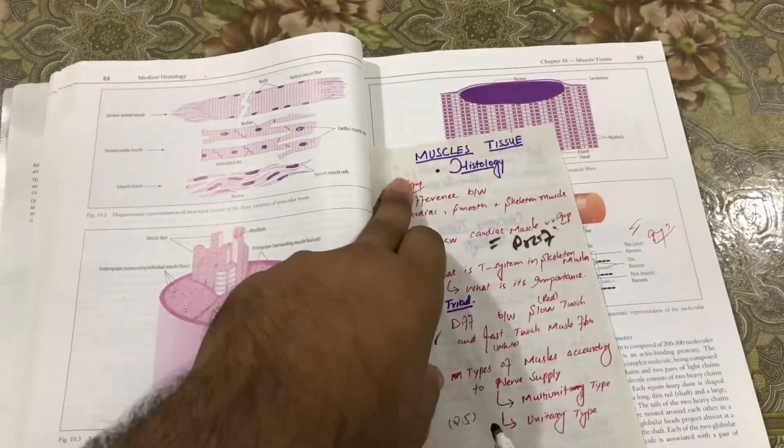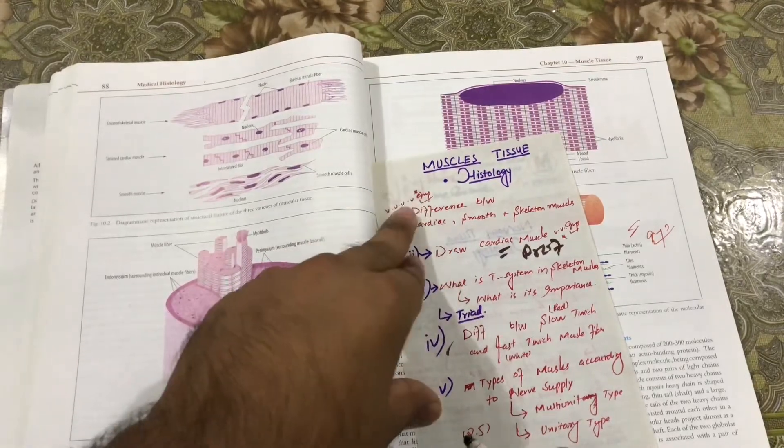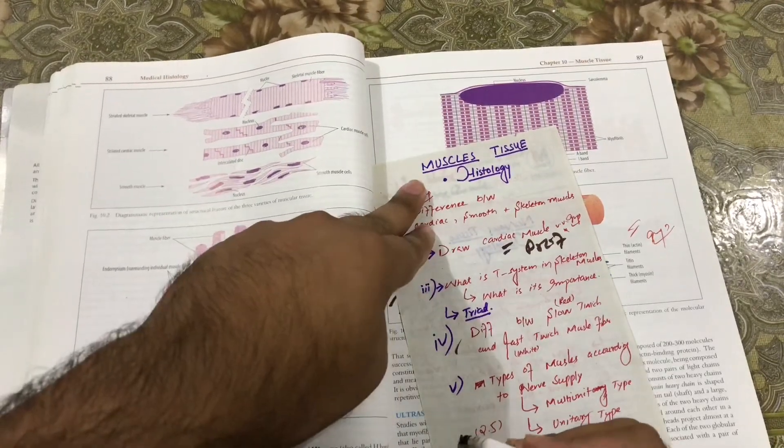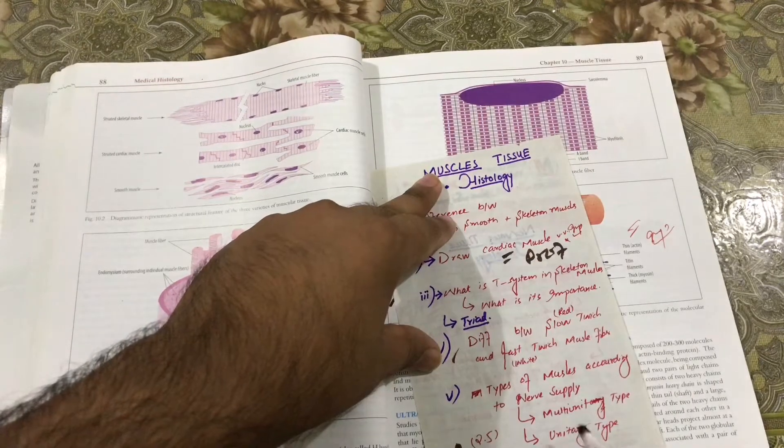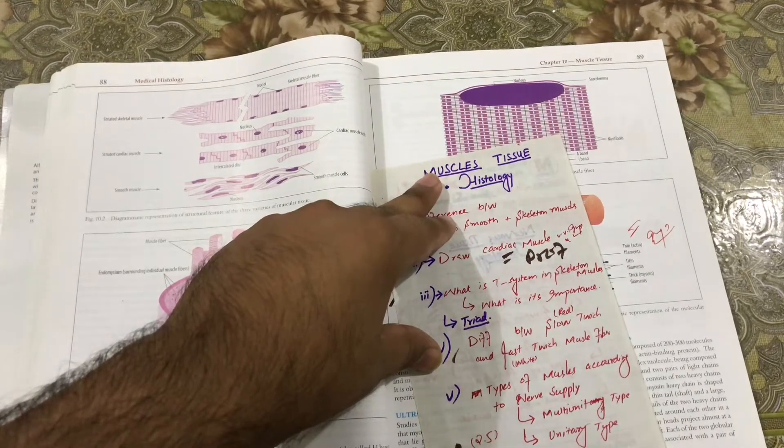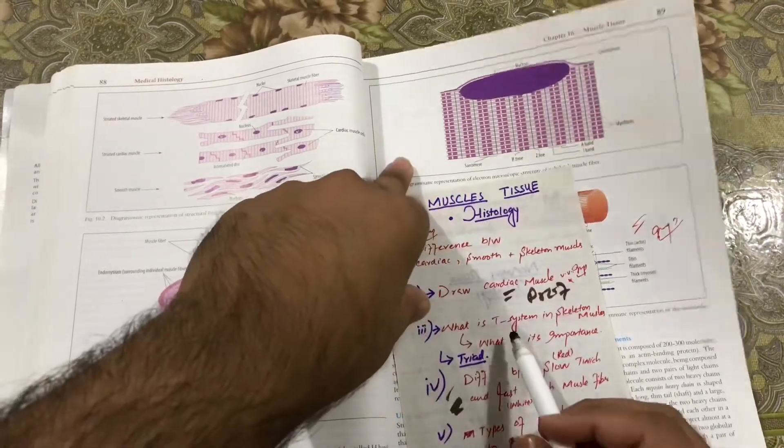So this question I will tell you, you can't have in one book. You can't have a specific—different books, different questions come from different sources. So multi-unitary and unitary, I think you will have to be available, this one and this one. T-system here.